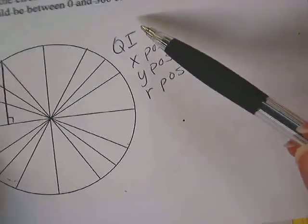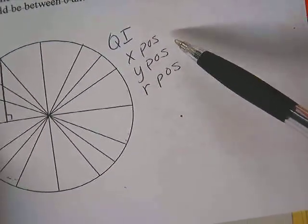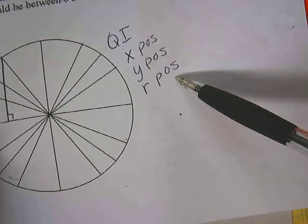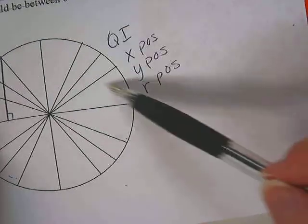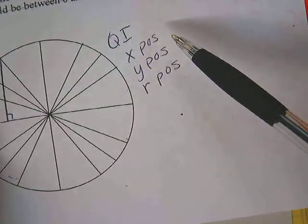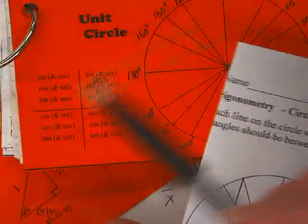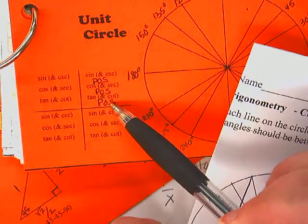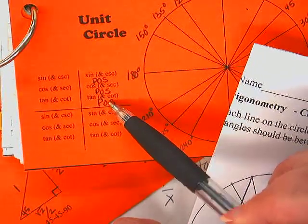Alright, so rehash here. Quadrant 1: x is positive, y is positive, r is positive. So that means all of our trig ratios—sine, cosine, tangent, cosecant, secant, cotangent—will all be positive. So all of these are positive, correct? Correct. Good.